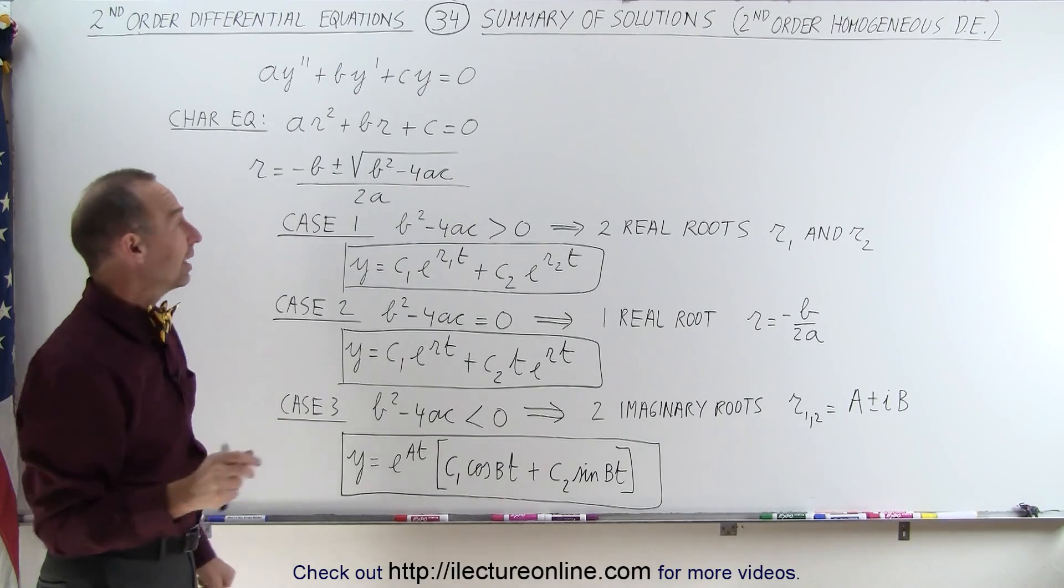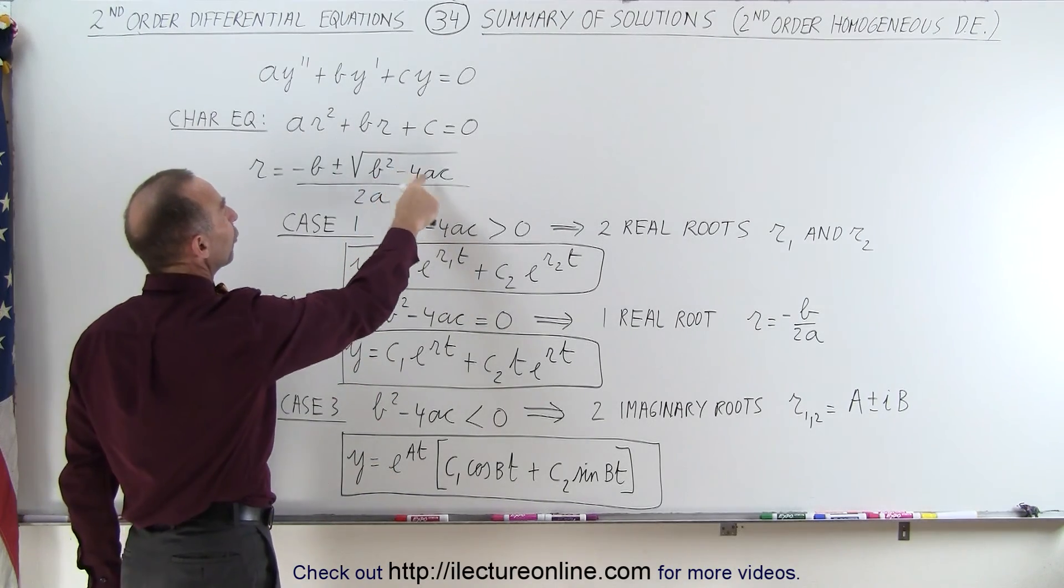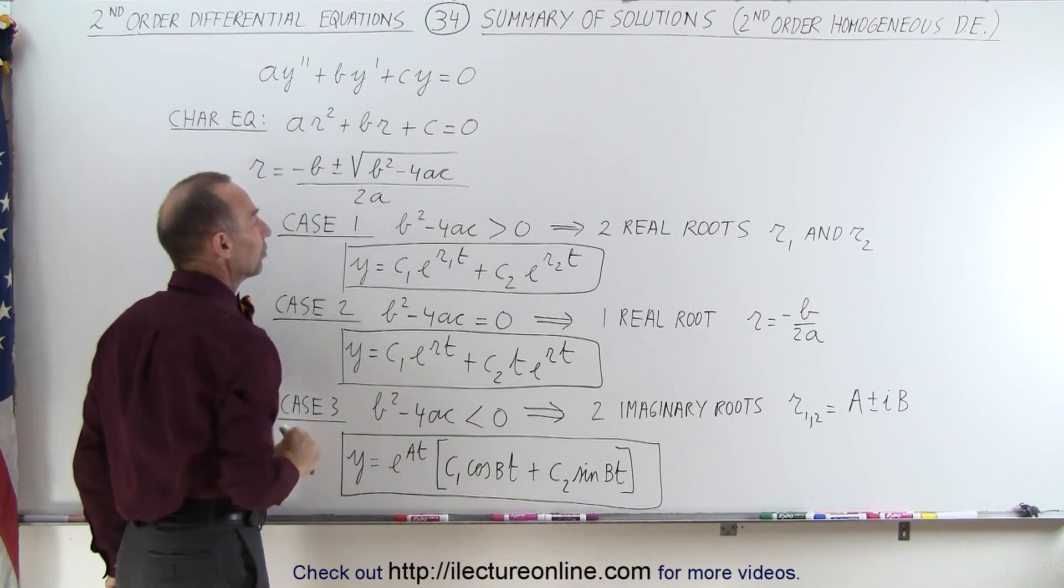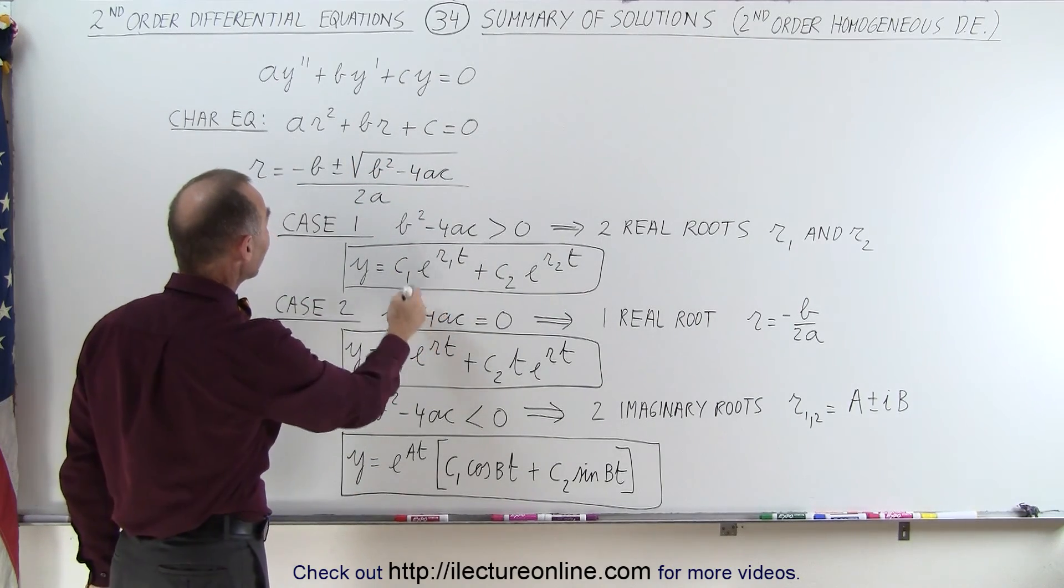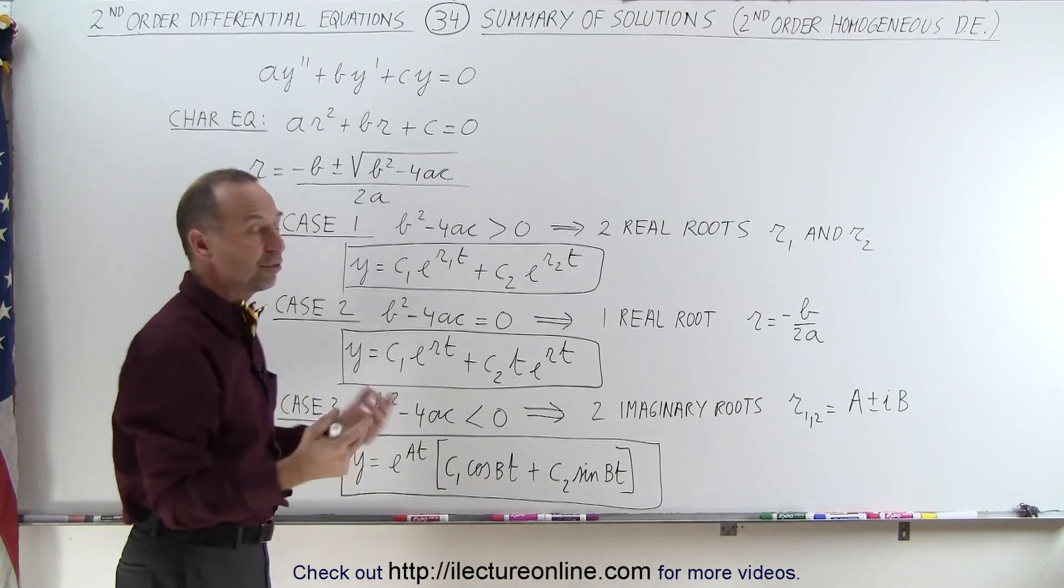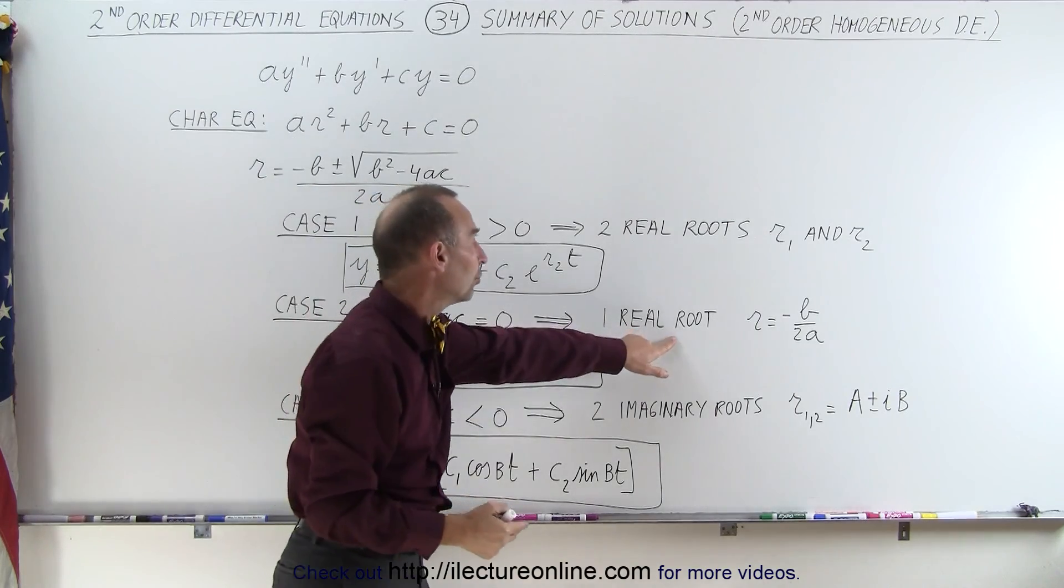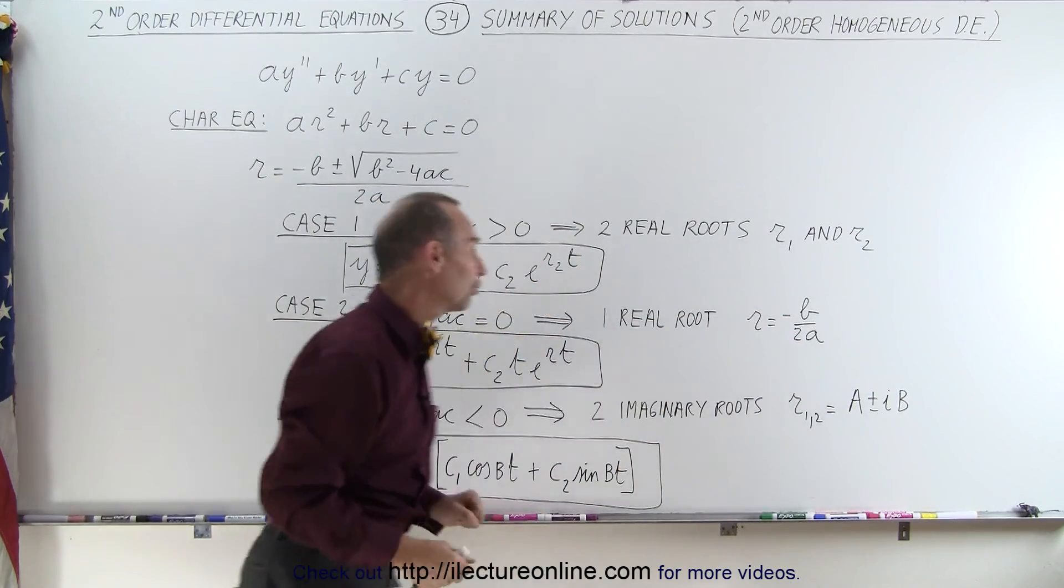The second case is when b² - 4ac is exactly equal to zero. In that case, the remainder of that is -b/2a, which means there's simply a single root, r = -b/2a.